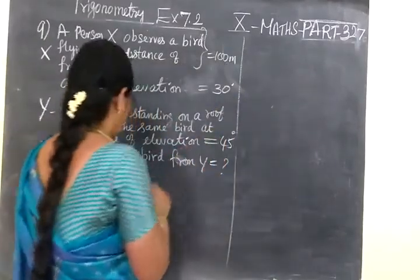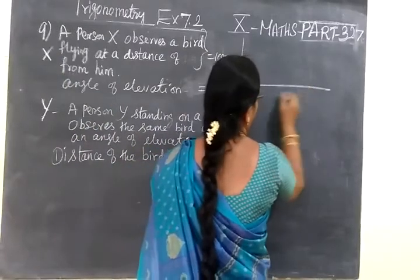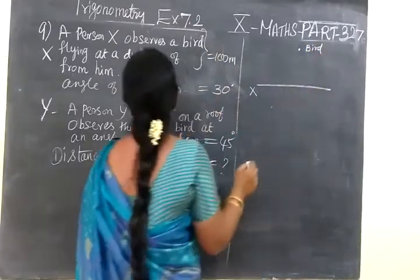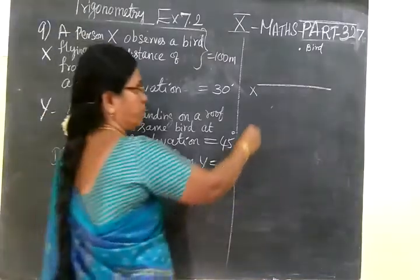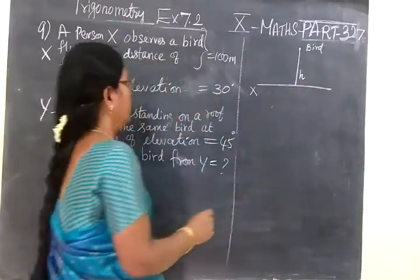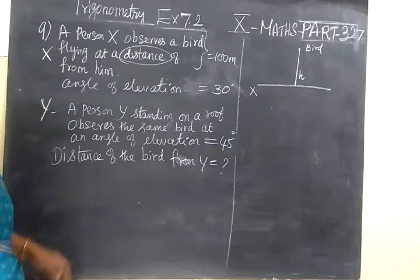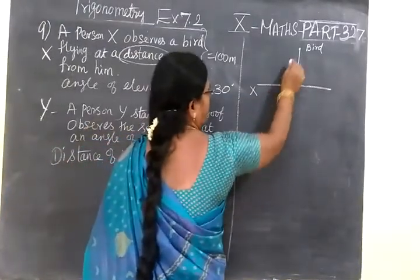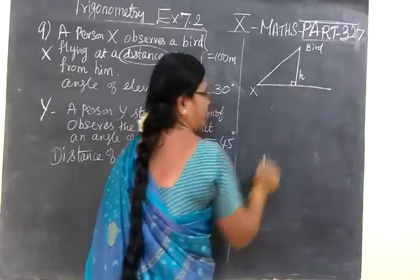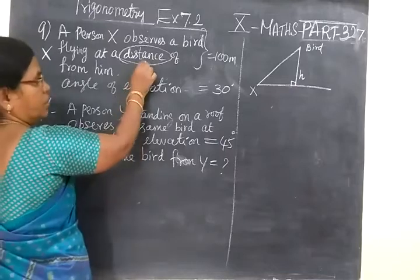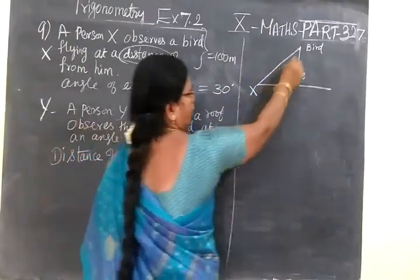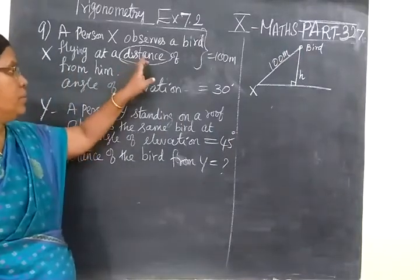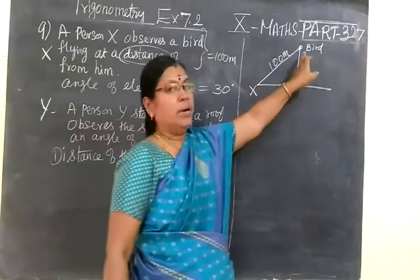A person is standing on the ground level. The bird is flying at a certain height. But it is given at a distance — you must know the difference between 'height of' and 'distance of'. Height refers to the perpendicular distance, while distance refers to the line of sight — the line drawn between the eye level and the object. So distance means line of sight. The person X and bird distance is given as 100 meters.